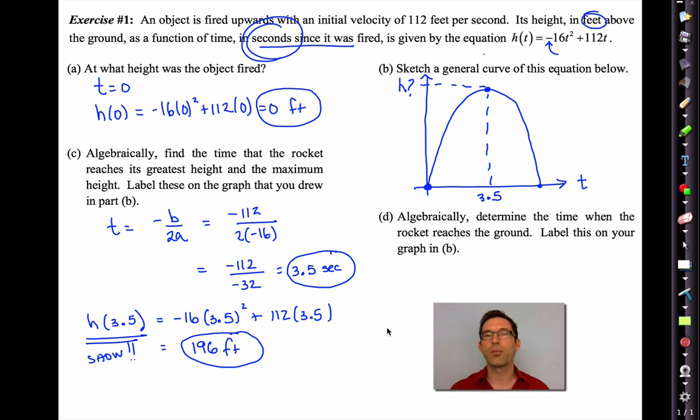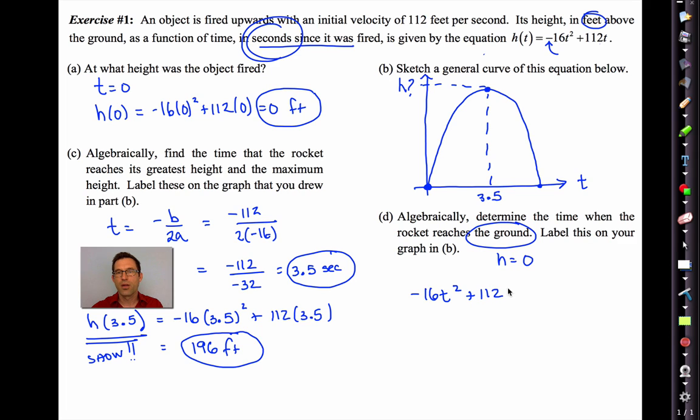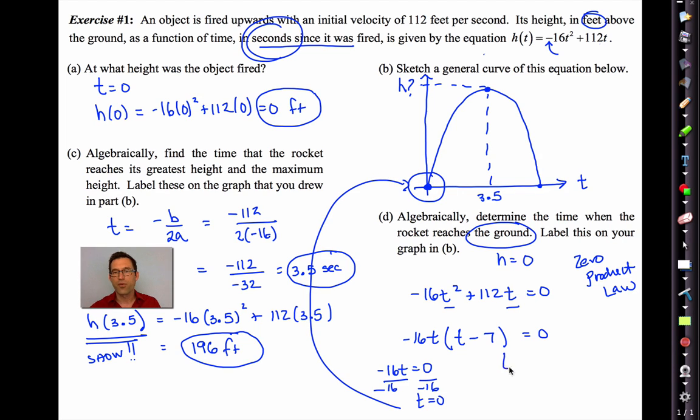Now finally, letter D asks us to algebraically determine the time when the rocket reaches the ground. Label this on your graph. At the ground, H is equal to zero. So really, what I'm looking to do is solve this equation. Since it's a quadratic, we want to use the zero product law if we can. We already have it equal to zero. Maybe I'll factor out a GCF. I can pull out a T. I can actually also pull out a negative 16. You could just pull out the T. If I pull out a negative 16, I'll be left with T minus 7.